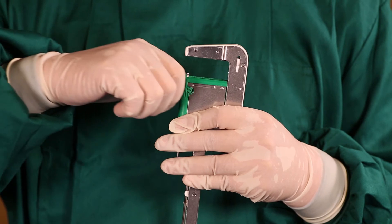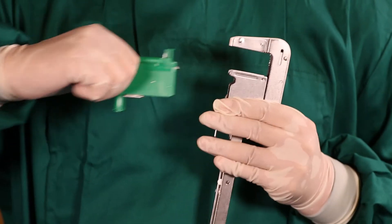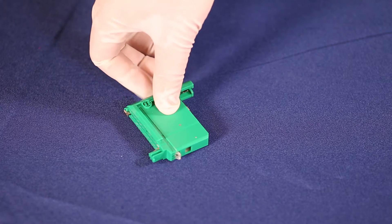To remove the reloading unit, grasp the finger pads at the top and pull it straight upward from the jaws.